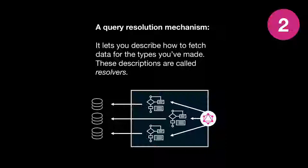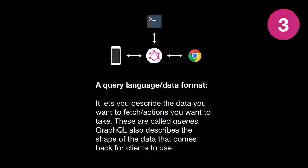The query resolution mechanism describes how the data for those types is going to be fetched. GraphQL sits in the middle — you run some code, you contact some services, and you return the result. The REST equivalent is that you have HTTP handlers: you're running something like Sinatra, Express, or Cowboy. You write handlers for your endpoints, and those handlers perform some kind of action.